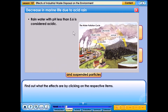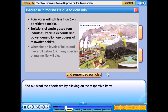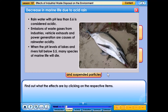Rainwater with a pH less than 5.6 is considered acidic. Emissions of waste gases from industries, vehicle exhaust and power generation are causes of rainwater acidity. When the pH level of lakes and rivers falls below 5.5, many species of marine life will die. This could affect the ecosystem as well.